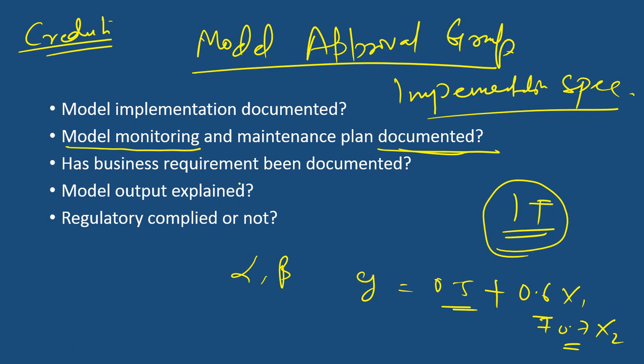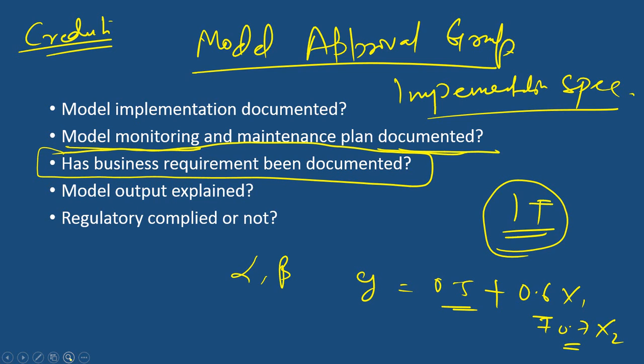The next checklist is whether business requirements have been documented. This is an important point that is often missed in the model document. Many times the modeling team misses out on consulting the business team, builds the model by itself, and later finds it doesn't meet business requirements. It is very important that the modeling team has consulted the respective business department and taken all requirements and documented them properly.